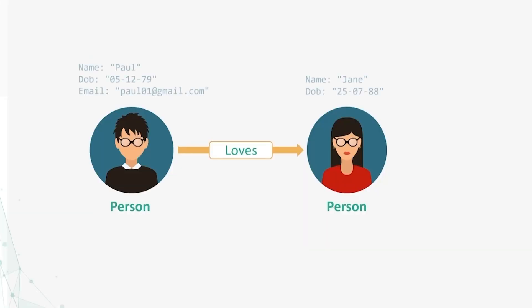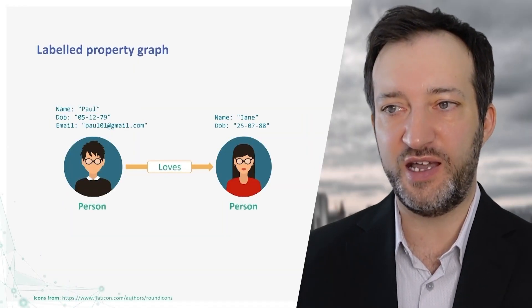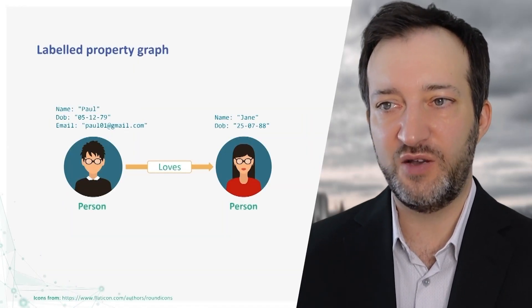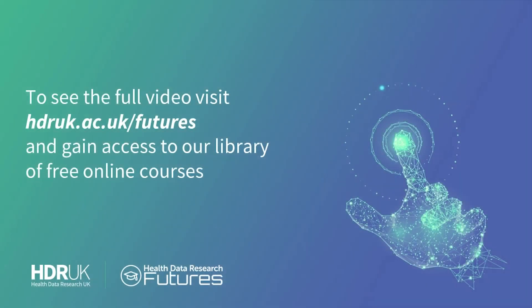So we can then add additional labels to these nodes and relationships. Here, for example, we can see how we do this, and we do this in the same way that we do in a database like MongoDB using key-value pairs. So here we can say that we have a key called 'name' and the value for that is 'Paul' in this case. We can have a key for his date of birth and then we can specify that, and we can also have a key for his email address.